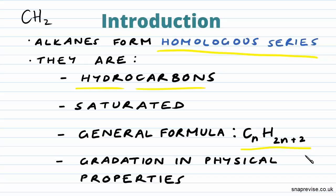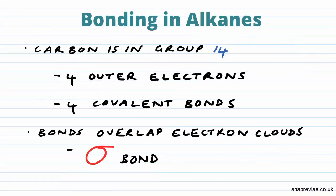Now let's have a look at the bonding within our alkanes. Our alkanes contain carbon, which is in group 14, or group 4, depending on what you've learnt. That means that our carbon has four outer electrons, allowing it to form four covalent bonds with other atoms, the other atoms being either carbon or hydrogen, as alkanes are hydrocarbons.